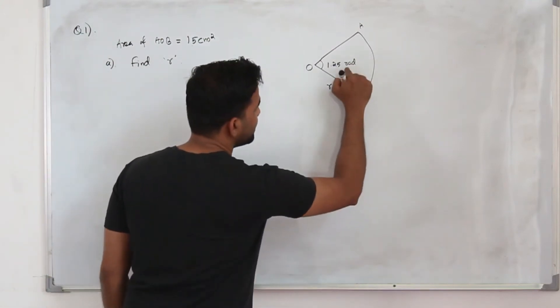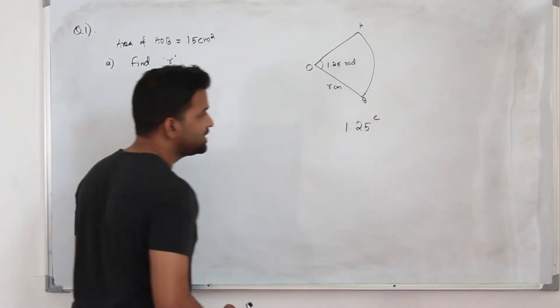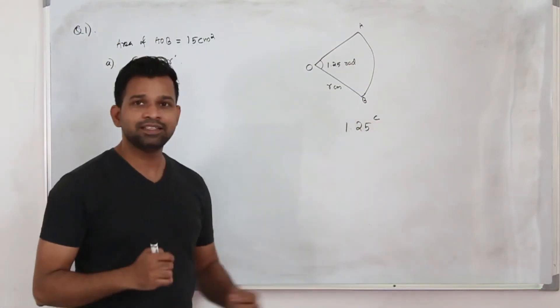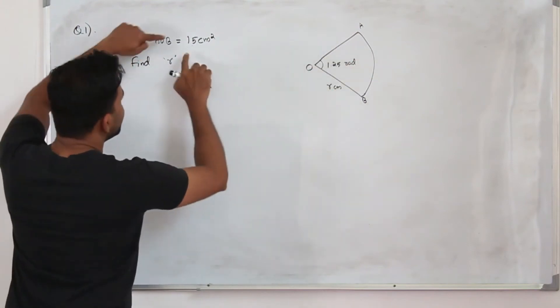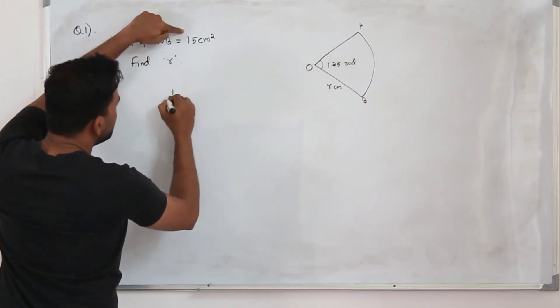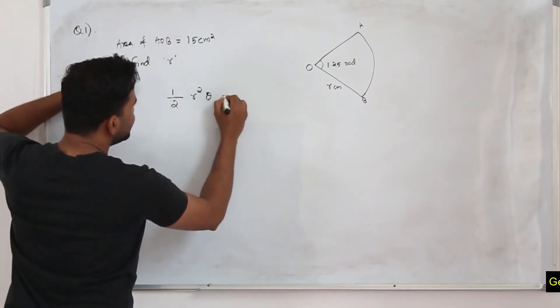Here the angle is given in radians, not degrees. Sometimes you can see, instead of RAD, you might be given a little c up there—that means the measurement is in radians. Now, the area of the sector is 15 centimeter square. There is a formula to find the area of the sector: half R square theta. That's the formula.